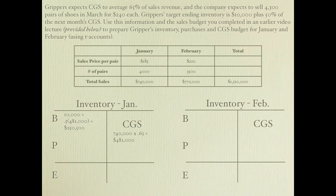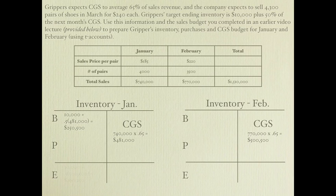Now let's calculate cost of goods sold for February. Cost of goods sold is 65 percent of sales revenue, so February sales revenue of $770,000 times 65 percent gives $500,500. January's ending inventory is $10,000 plus 50 percent of February's cost of goods sold, which gives ending inventory for January of $260,250.